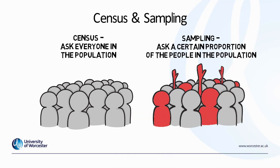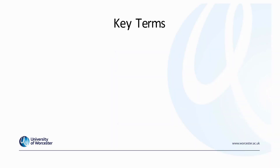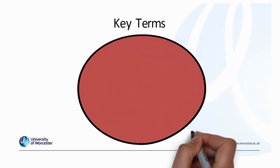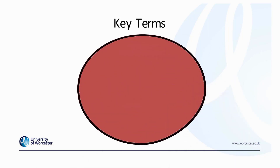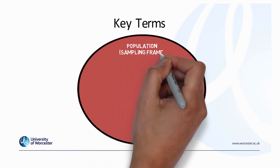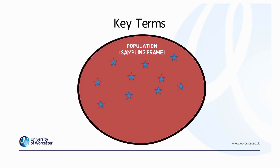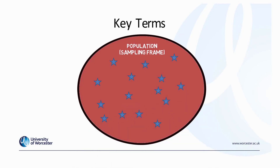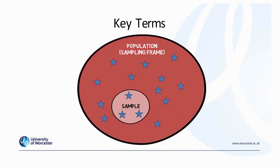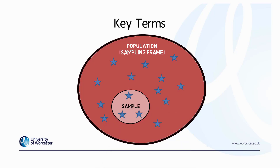Realistically, when it comes to research you will be doing for your own project, you're not going to be able to ask absolutely everybody that you're interested in. So you're more likely to take a sampling approach, selecting only a certain proportion of the people you're interested in researching. We have the population or sampling frame, which is everybody we're interested in researching, and then we will select a sample from within this population or sampling frame.